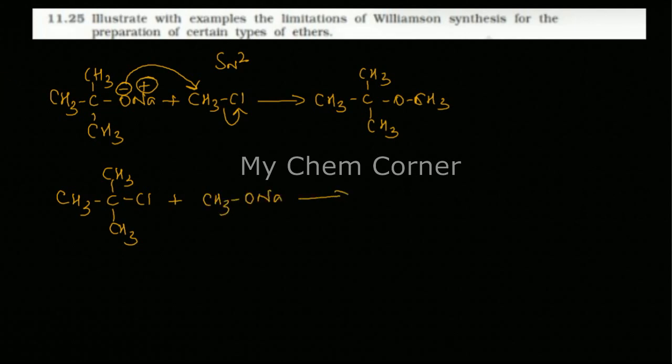Now what will happen here is, in this case, because when this bond breaks over here, you're forming a very stable carbocation, tertiary carbocation. Because of this, what happens is, the alkoxide here will try to react as a base.